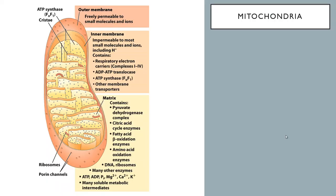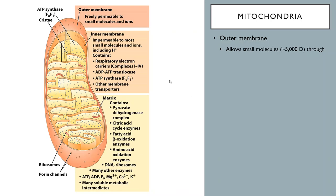Before we get too far into talking about this process, let's review some things about mitochondria, because that's where all this stuff is happening. If you've ever heard the saying that mitochondria are the powerhouse of the cell, this is why. Mitochondria are small organelles in eukaryote cells. They have two membranes — an outer membrane and an inner membrane. The outer membrane is really just a protective layer.